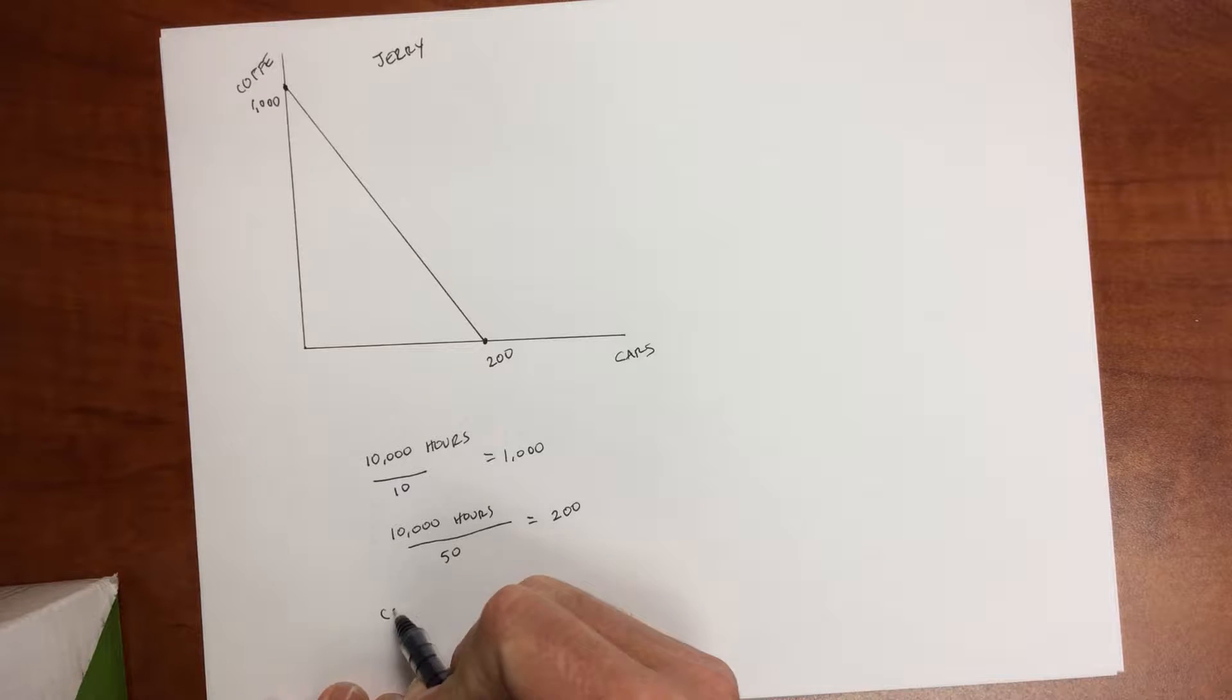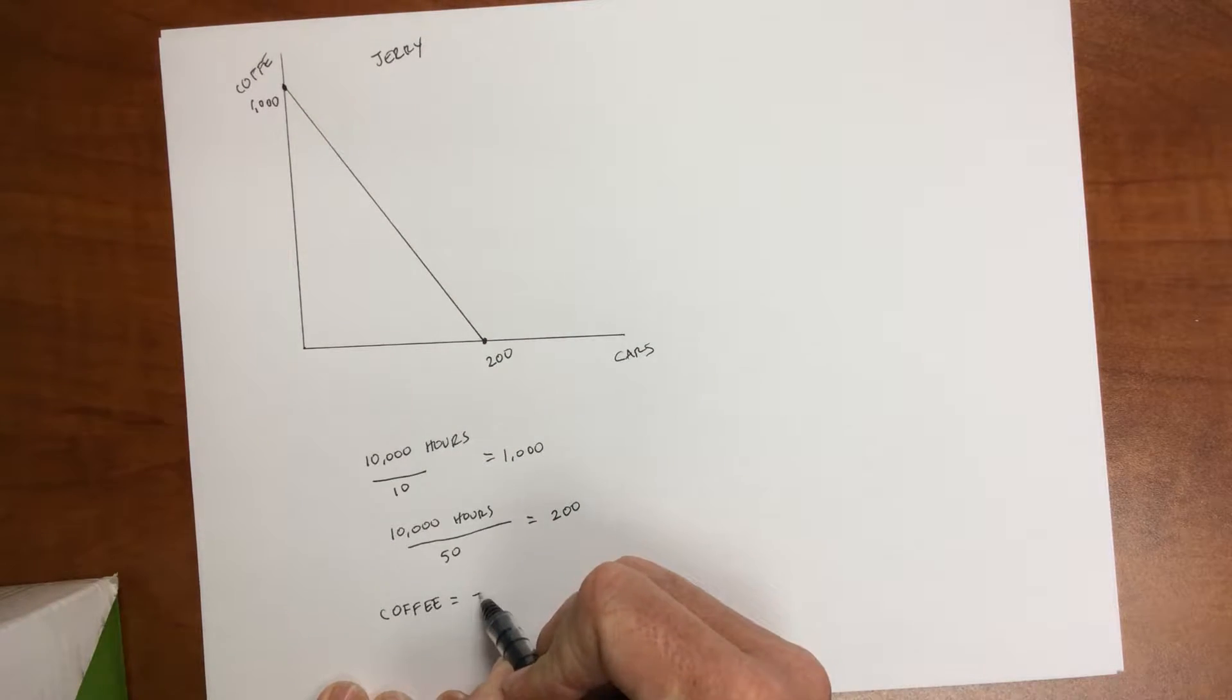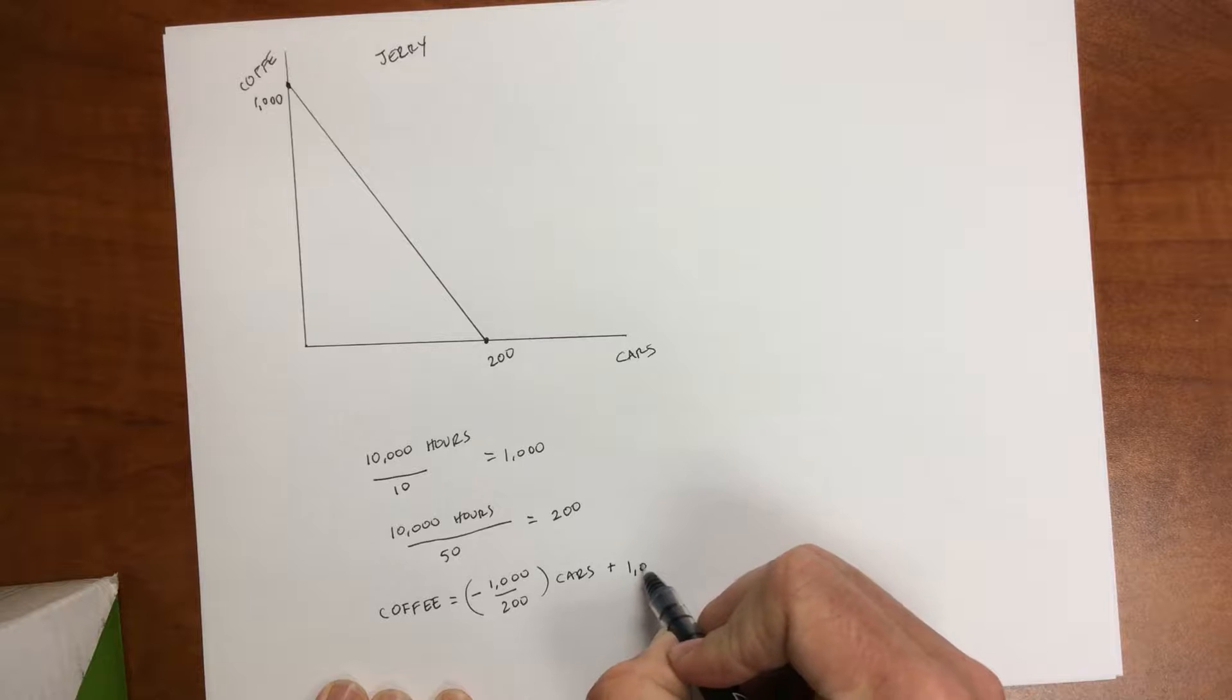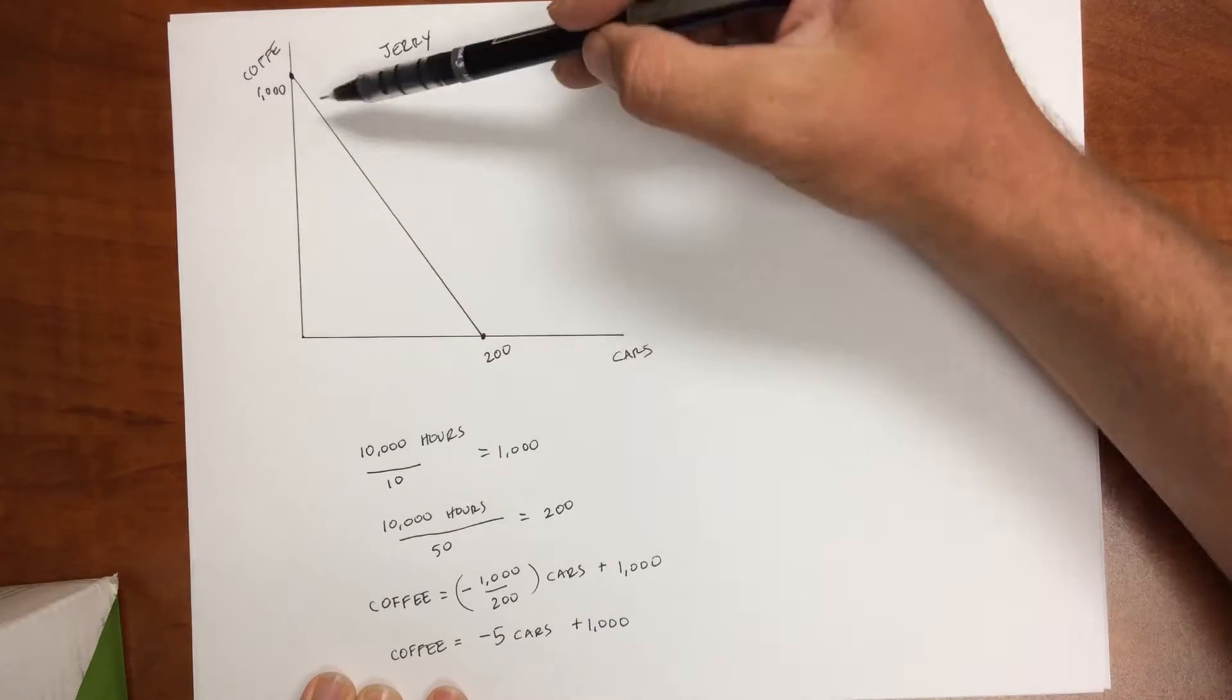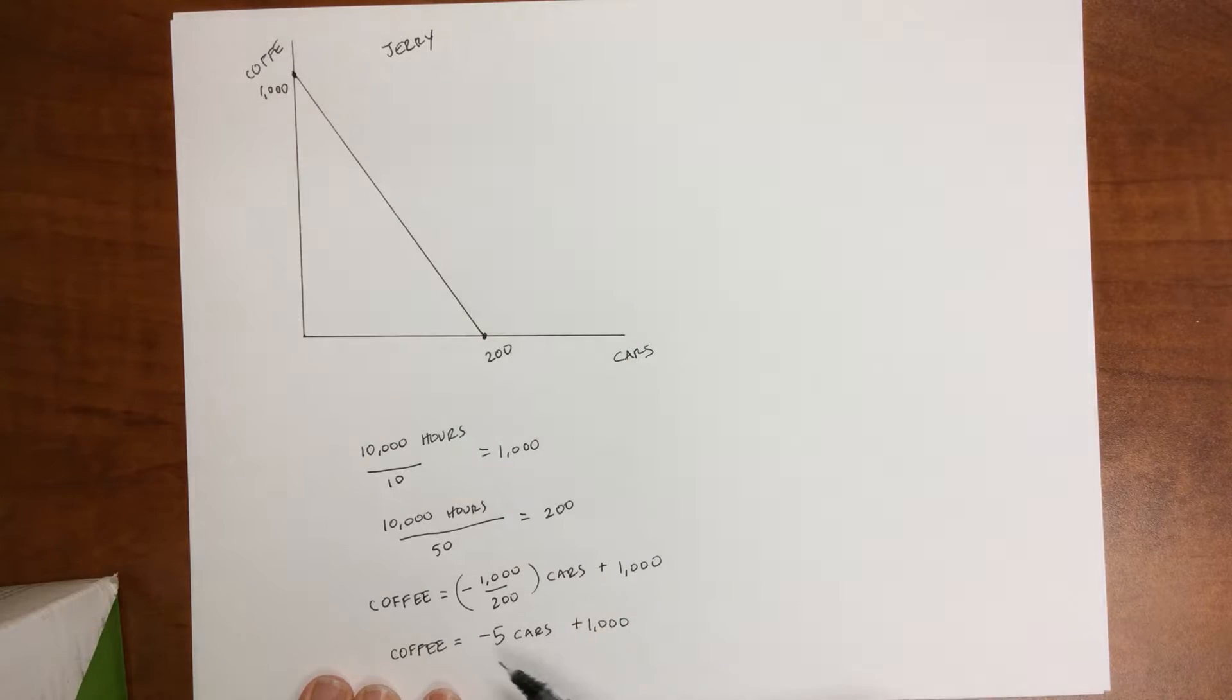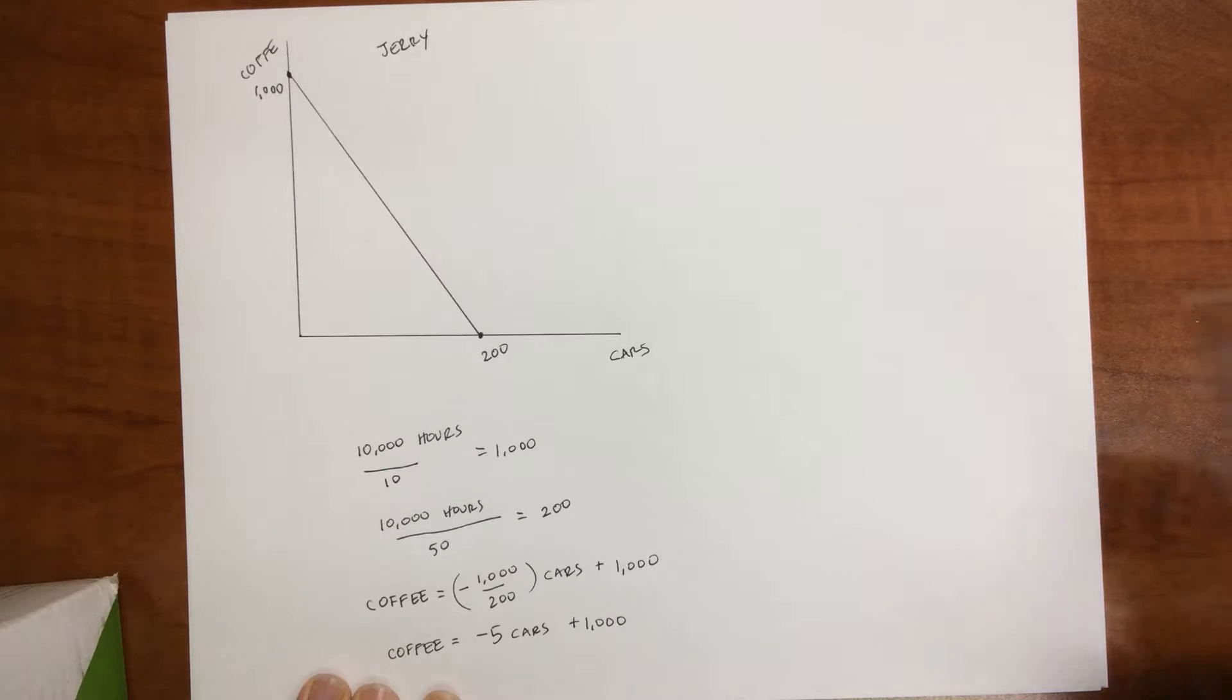And I can draw the equation for that using y equals mx plus b. Coffee equals the slope of the line. Remember, that's rise over run. So it's 1,000 divided by 200, which is negative 5 times cars plus our y-intercept, which is 1,000. So I'm going to rewrite that as coffee equals negative 5 cars plus 1,000. And so what this tells us is the slope here is for every additional car that I produce, it tells me I have to give up 5 cups of coffee. So this negative 5 is the opportunity cost of cars. Each car to produce costs me 5 cups of coffee. So there's Jerry.